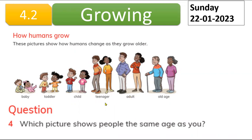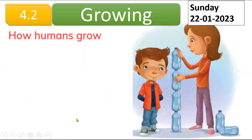Which picture shows people the same age as you? How old are you — seven, eight, or nine? So you are a child. You are not a toddler or a baby, and you are not a teenager like a teacher, or an adult or old age like mom and dad. You are the children.